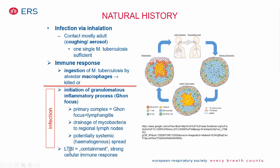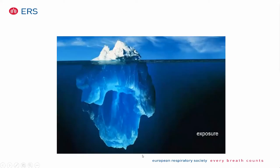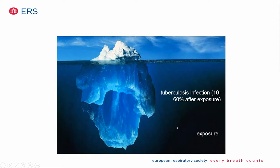Either the immune system is strong enough to contain the mycobacterium, resulting in latent tuberculosis, or the infection continues and progresses to active disease. The iceberg analogy — with most of it underwater — is a good reflection of tuberculosis. There is a lot of exposure in the world, and of those exposed, some will develop infection. Up to half of infected people may develop active tuberculosis disease.